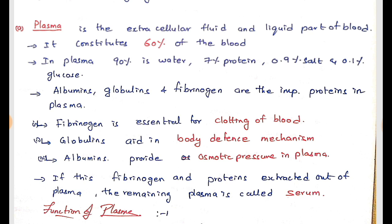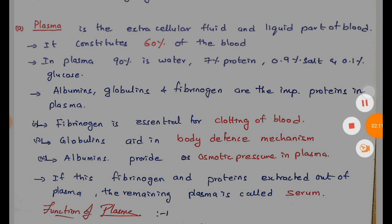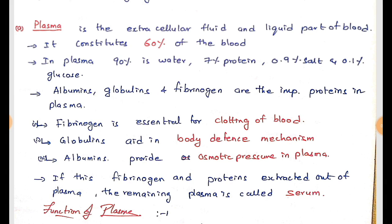Albumins, globulins, and fibrinogen are very important and they have specific roles to play in the human body. Fibrinogen is very important in the process of clotting of blood — it combines with thrombocytes to form clotting. Globulins aid in the body's defense mechanism. Albumins are a type of protein which maintains the pressure in plasma and in turn maintains pressure in the blood.